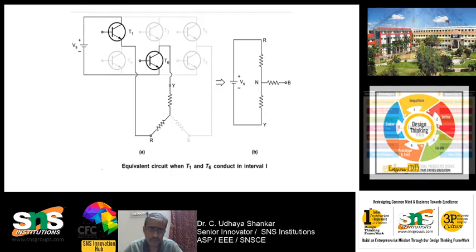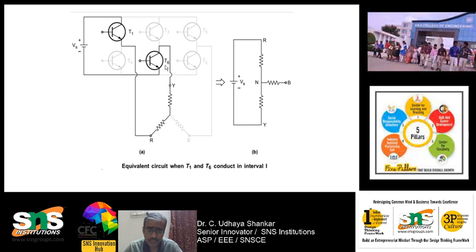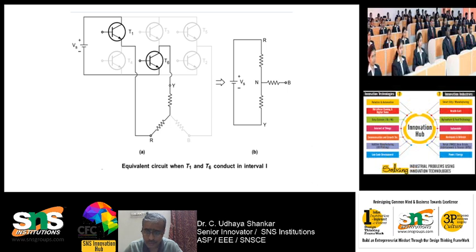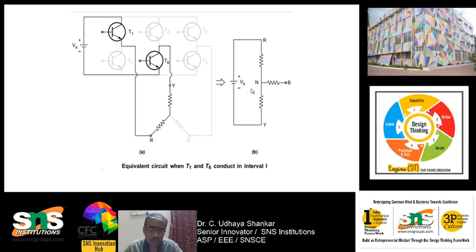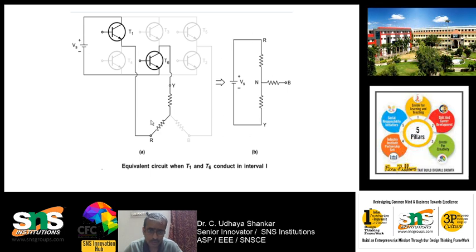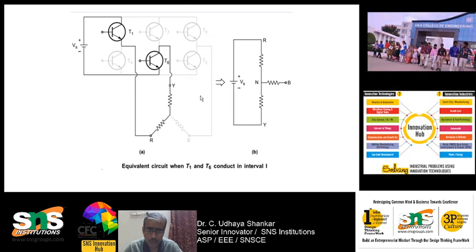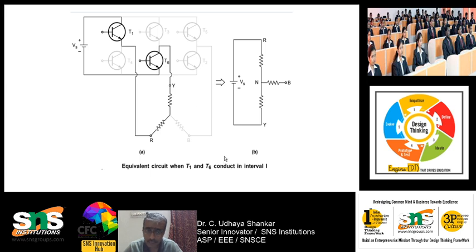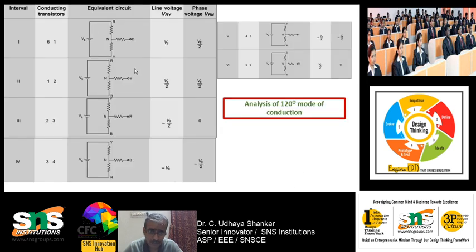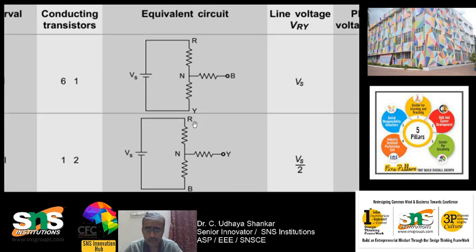Next we move to 120-degree mode of conduction. In this mode, two transistors are on at any interval. The switching sequence will have T1 and T6 switched on first. When T1 and T6 are switched on, only R-phase and Y-phase will be connected, whereas B-phase will not be connected to the supply. The equivalent circuit shows: positive terminal → T1 → R-phase, and Y-phase connected through T6 to the negative terminal. B-phase is open circuited because no transistor is switched on in the third leg — only the first and second legs have transistors switched on.